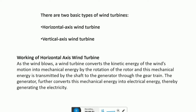Windmills are generally classified as horizontal axis wind turbines and vertical axis wind turbines, depending on their axis of rotation. In a horizontal axis wind turbine, as wind blows, it converts the kinetic energy of the wind motion into mechanical energy by the rotation of the rotor. This mechanical energy is transmitted by the shaft to the generator through the gearbox.